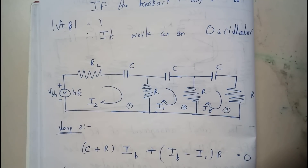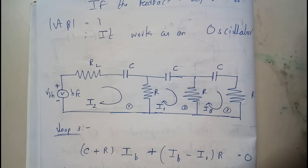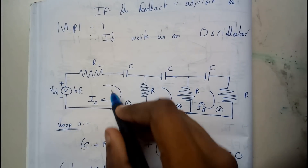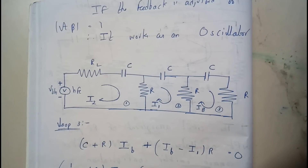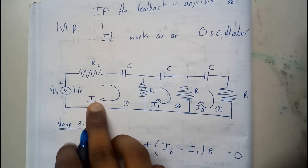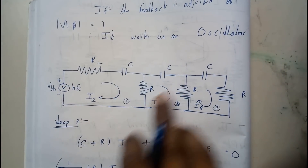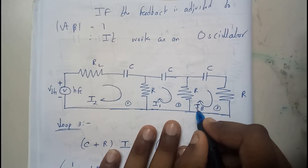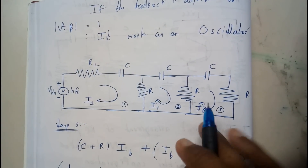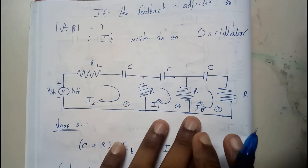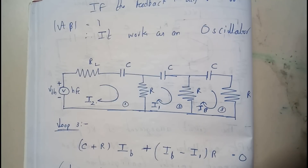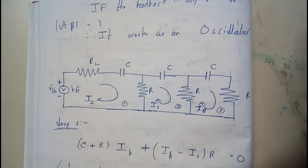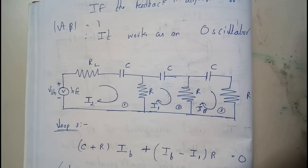I hope everyone knows how to write a loop equation. We draw a loop and take a consistent direction — I took clockwise. I wrote from loop 3 to loop 1. The current ib is assumed in the first loop, i1 in the second, and i2 in the third. In whichever loop you are, that current is assumed to be the largest.